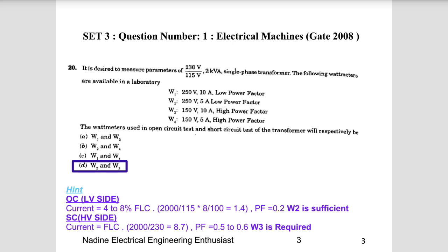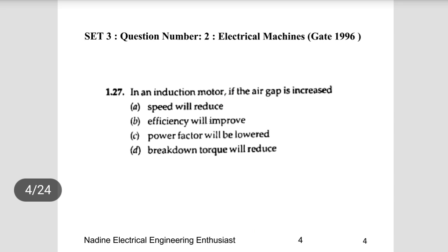To summarize: for the 230V/115V, 2 kVA transformer, we select the correct wattmeters for accuracy. We use a low power factor meter for the open circuit test (power factor ~0.2) and a high power factor meter for the short circuit test (power factor ~0.5 to 0.6). The current in the open circuit test is 4 to 8% of full load current.